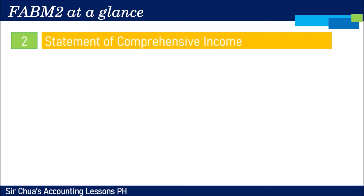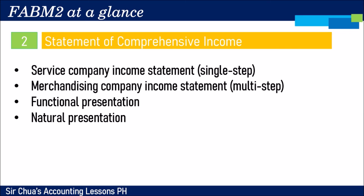Our next lesson is the income statement, the statement of comprehensive income. We will revisit how to prepare a single-step income statement for service companies — revenue minus expenses — and the multi-step merchandising company income statement: net sales minus cost of goods sold equals gross profit, less operating expenses, equals net income. We will also review income statement preparation using the functional presentation and the natural presentation — the function of expense method and the nature of expense method.